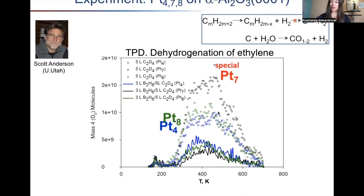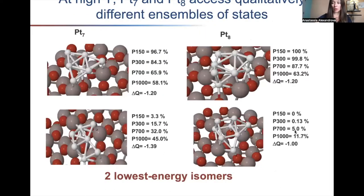The first interesting question that illustrates my point is the difference between platinum seven and platinum eight. Similar in size — so why such radically different activity with respect to ethylene dehydrogenation? Pt8 is somehow similar to Pt4. We want to answer this question, and it actually illustrates very important points in this talk. As I told you, we first need to perform sampling of the potential energy surface — or free energy surface — of these clusters.